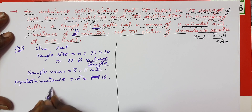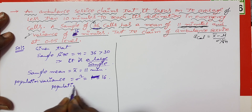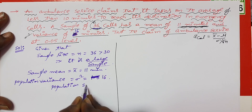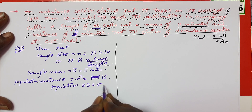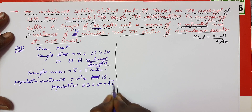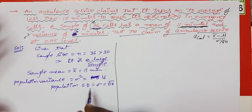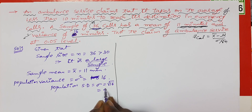The population standard deviation sigma equals the square root of 16, which gives us 4.